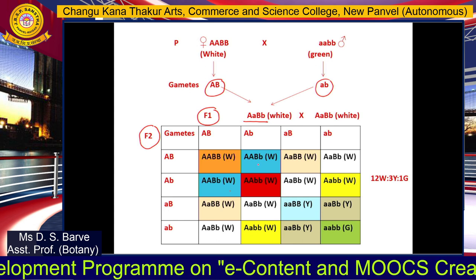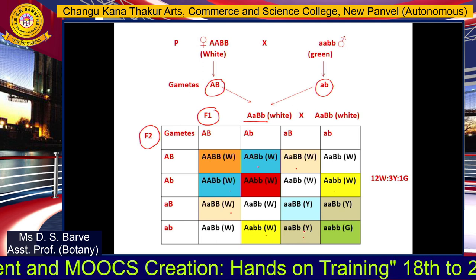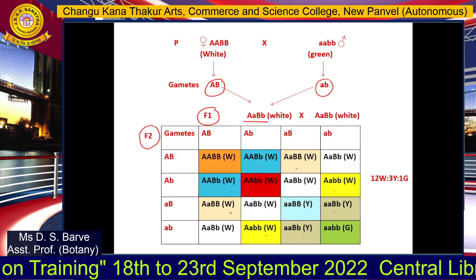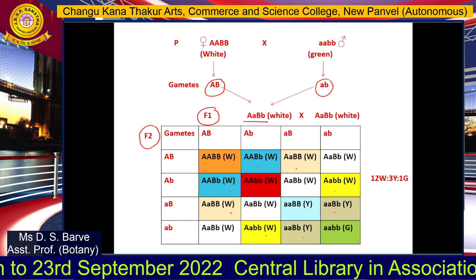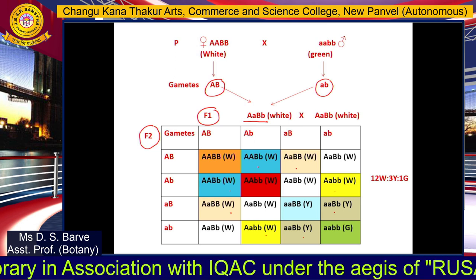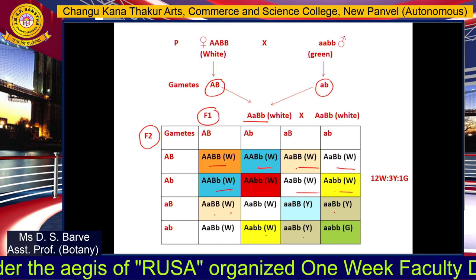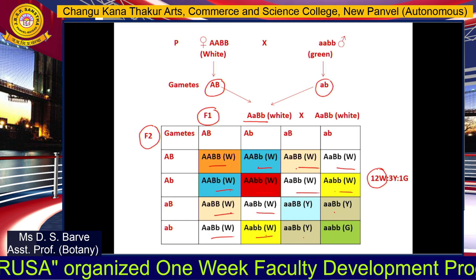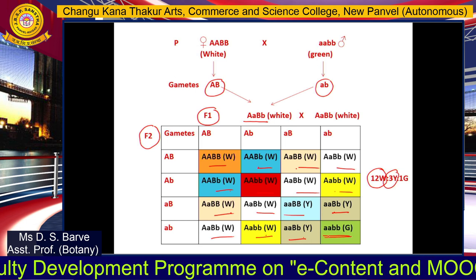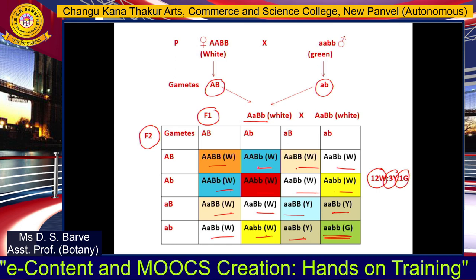In all boxes where the letter W appears in brackets, this indicates a phenotype of white fruits. Counting across the table: boxes 1 through 12 all show white fruit — giving us the 12 in the ratio. The three yellow genotypes are counted as 1, 2, and 3. Only one genotype — small a small a small b small b — gives the phenotype of green fruits, counted as 1. So the modified F2 ratio is confirmed as 12:3:1.